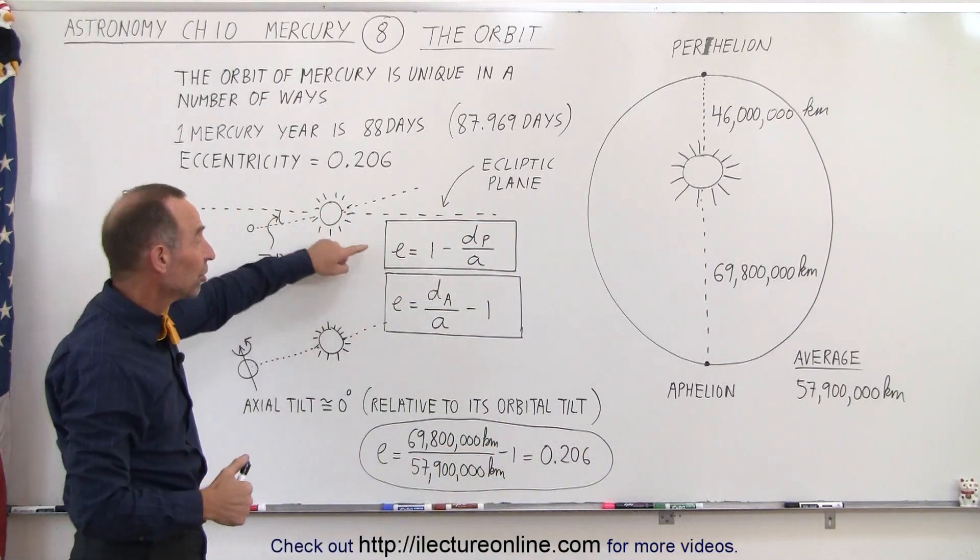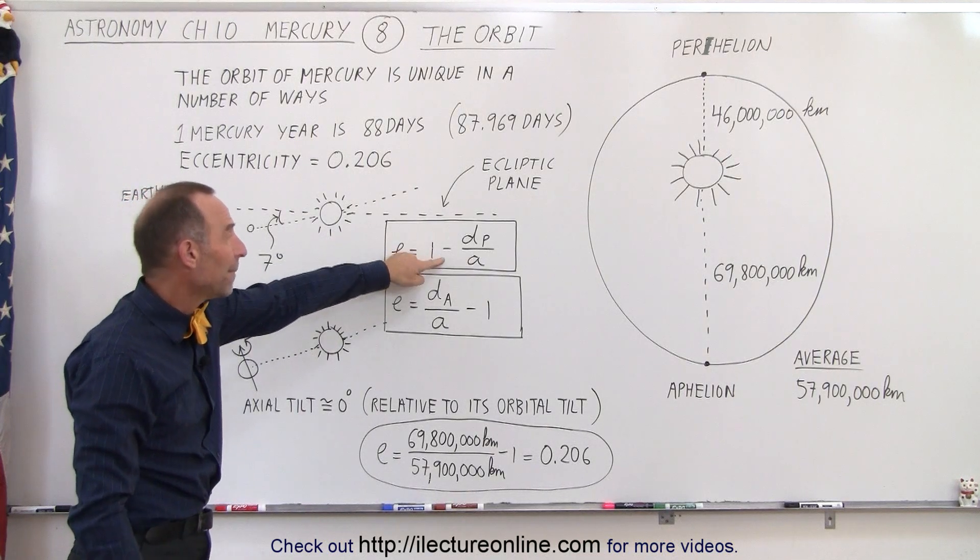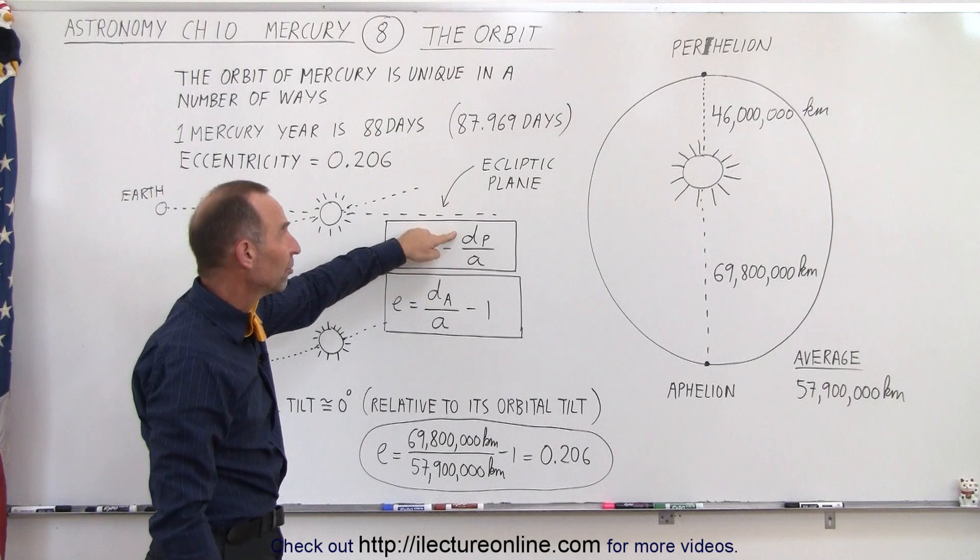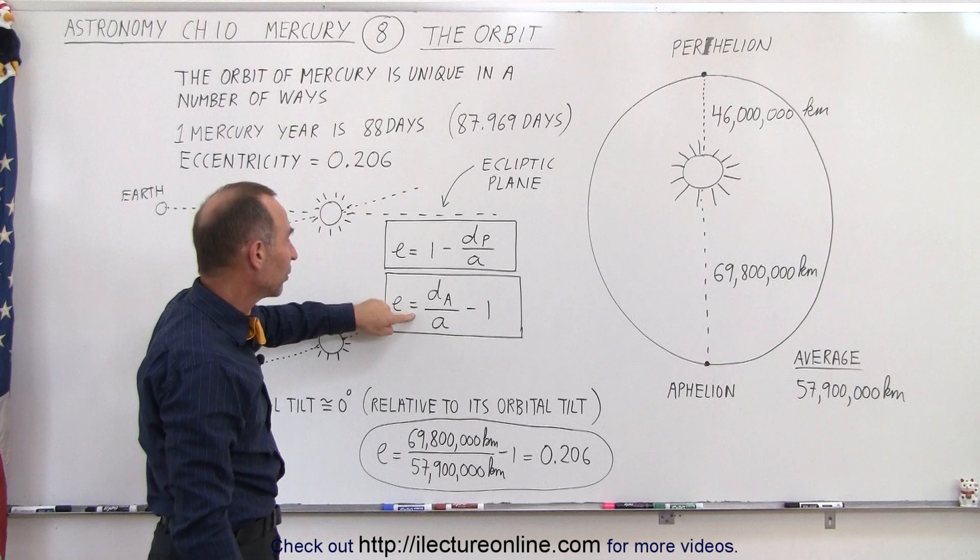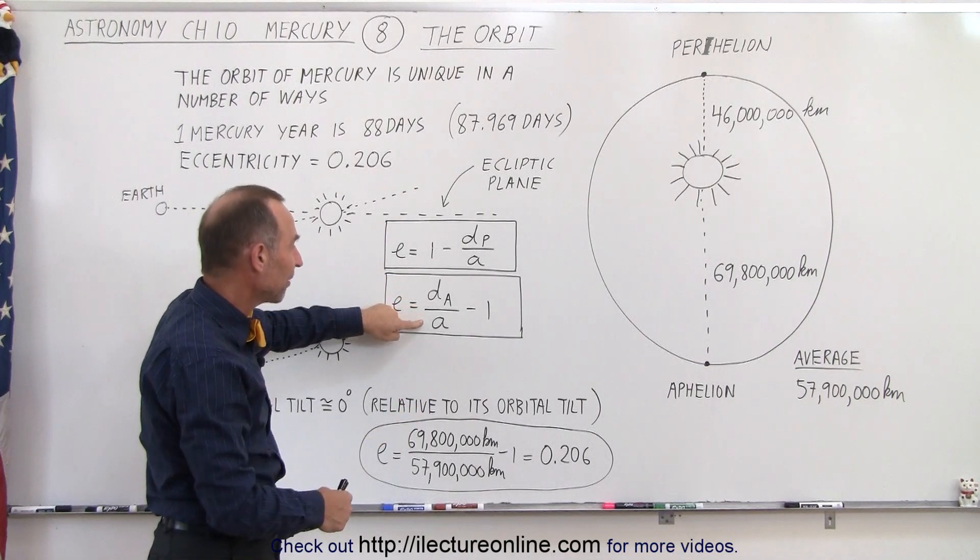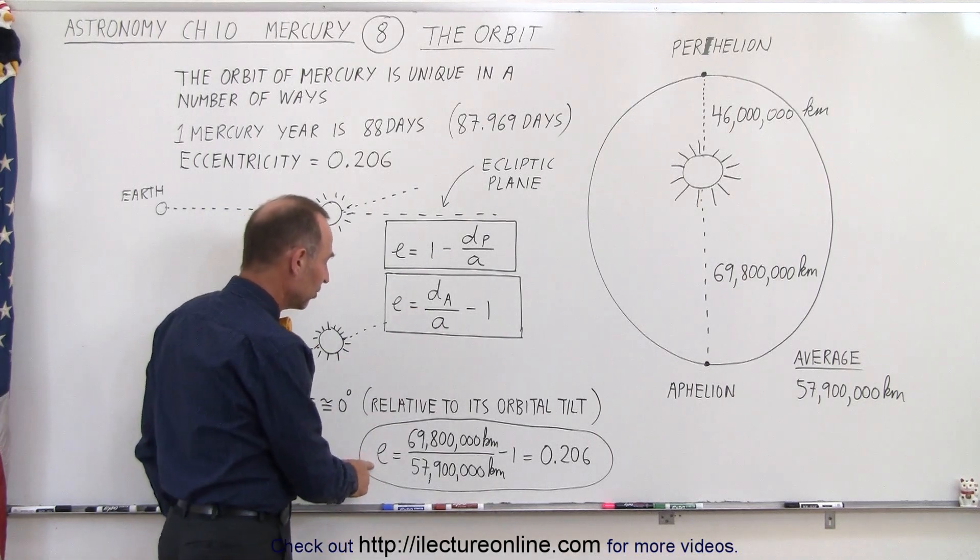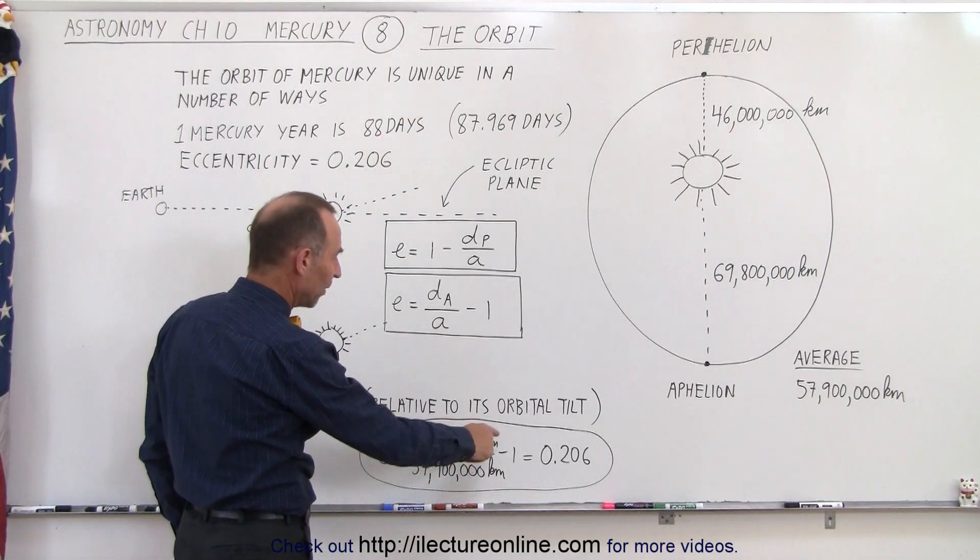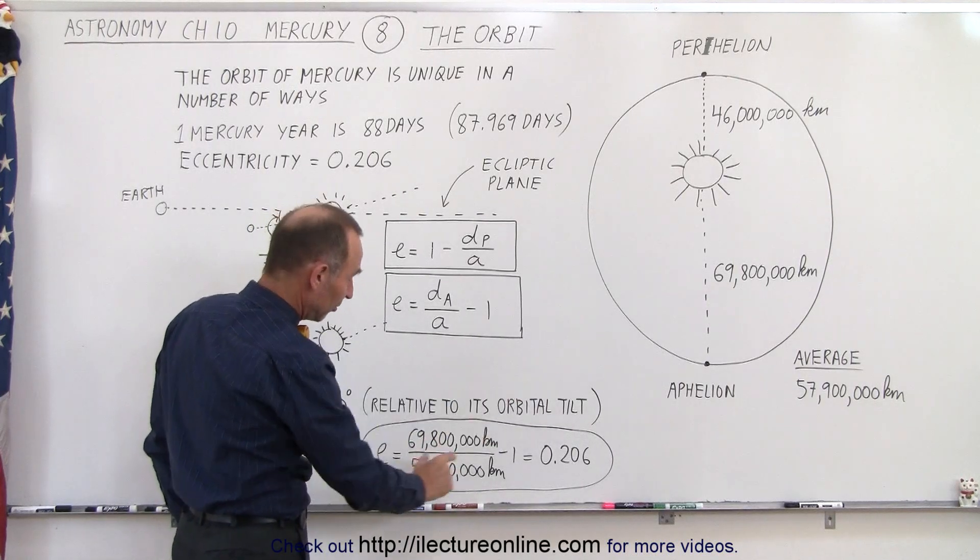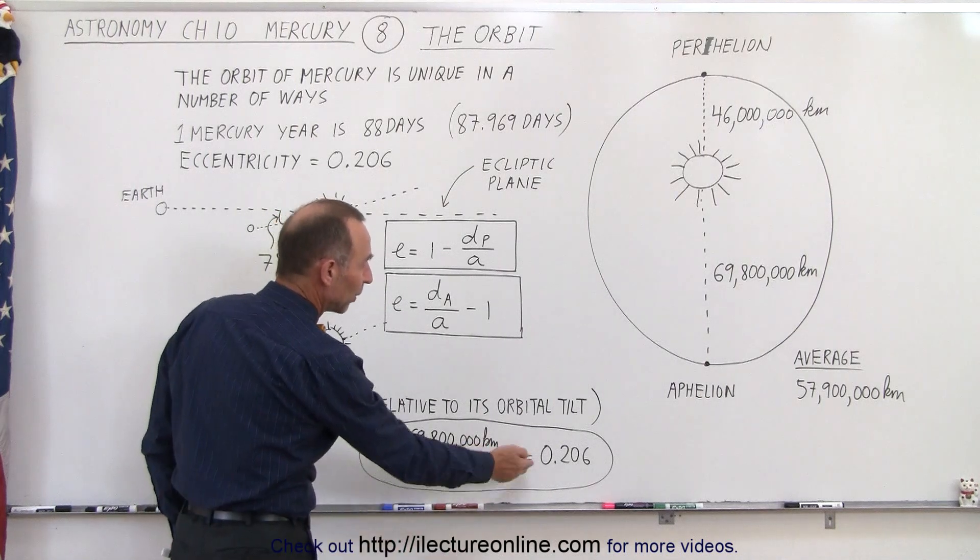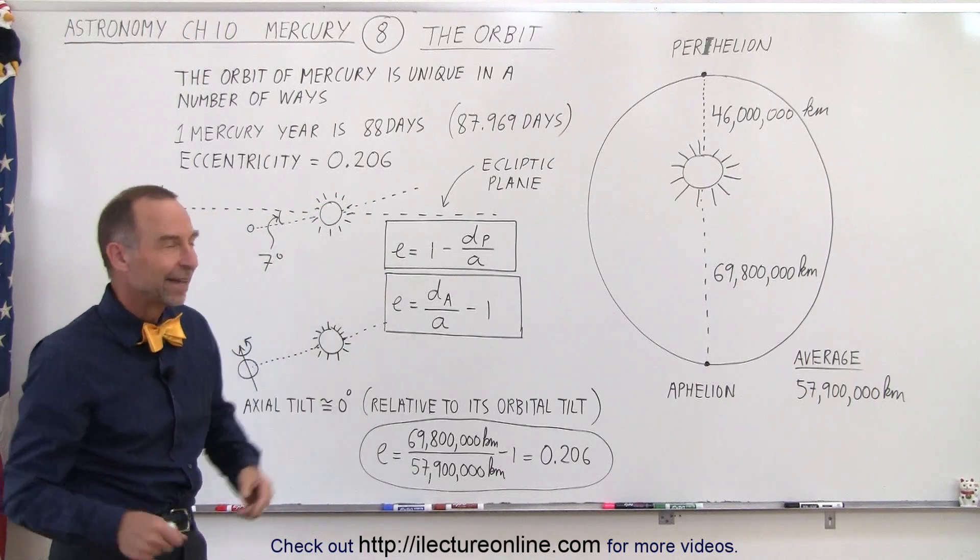We can actually calculate the eccentricity using either one of these two equations. Here, the eccentricity is equal to one minus the ratio of the distance to perihelion divided by the average distance, and here the eccentricity is equal to the distance to aphelion divided by the average distance minus one. As an example, I've used the bottom equation, where the eccentricity is equal to the distance to aphelion, 69.8 million kilometers, divided by the average distance, 57.9 million kilometers, minus one, which is equal to 0.206. And if you use the other equation, you get the exact same result.